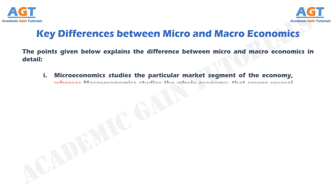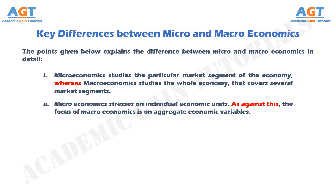Number 1: Microeconomics studies the particular market segment of the economy, whereas macroeconomics studies the whole economy that covers several market segments. Number 2: Microeconomics stresses on individual economic units. As against this, the focus of macroeconomics is on aggregate economic variables.